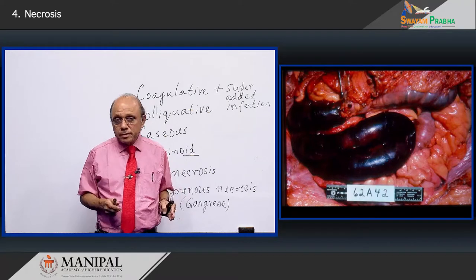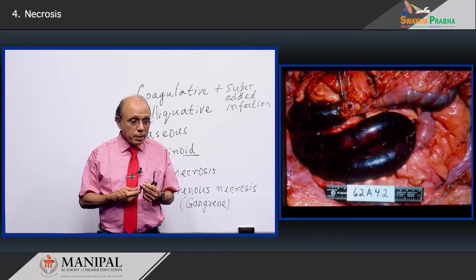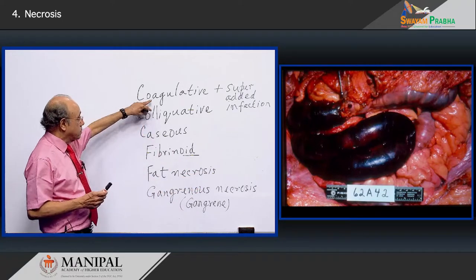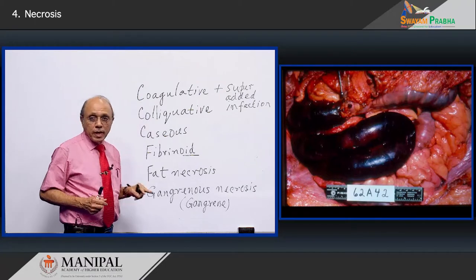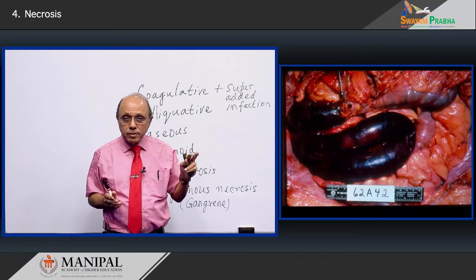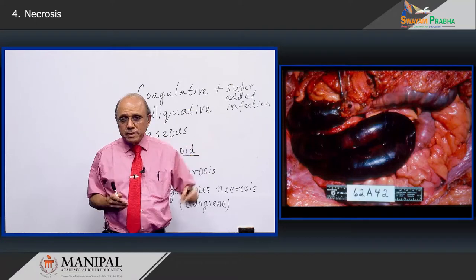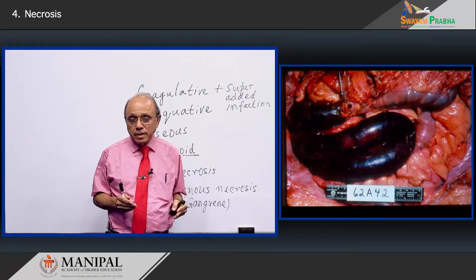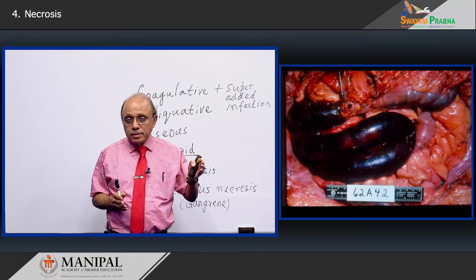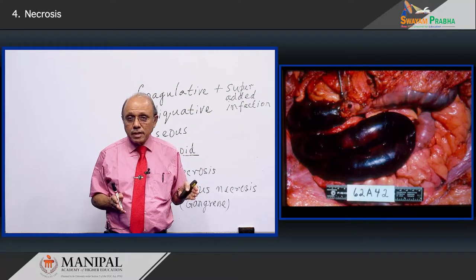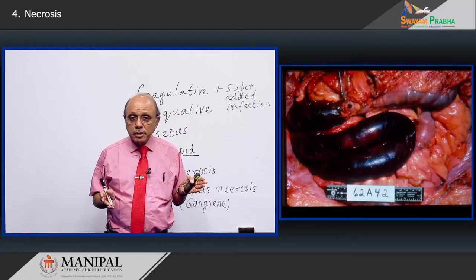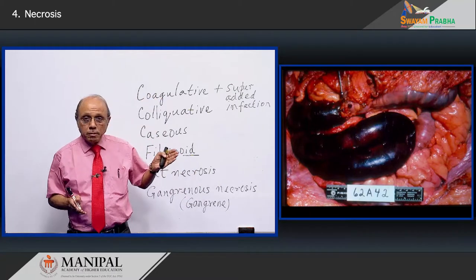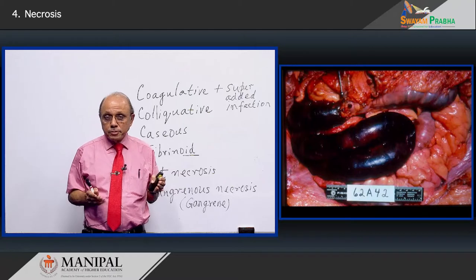Remember, gangrene is after all a variation of coagulative necrosis. There are three types of gangrene one must be aware of: dry gangrene, typically seen in the diabetic foot; wet gangrene, seen in the intestine; and gas gangrene, caused by the Clostridia group of organisms — perhaps the most serious of the three types.